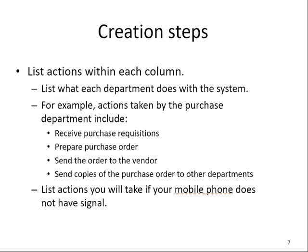Once we determine the columns and their headings, we're going to list actions within each column — basically what each department will do within the system. For example, what are the actions taken by the purchasing department? They receive purchase requisitions, prepare purchase orders, send the order to the vendor, and send copies of the purchase orders to other departments.